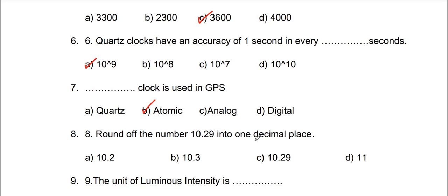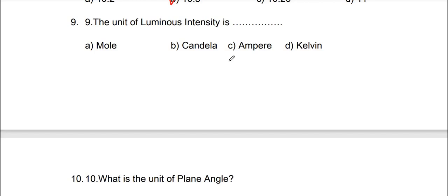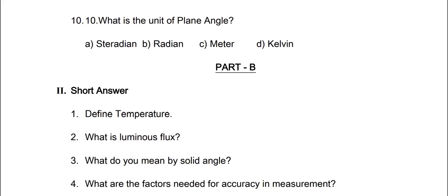Eighth one, round off the number 10.29 into 1 decimal place, so adhuvandhu 10.3, option B. Next, ninth one, the unit of luminous intensity is, so unit of luminous intensity, candela, option B.